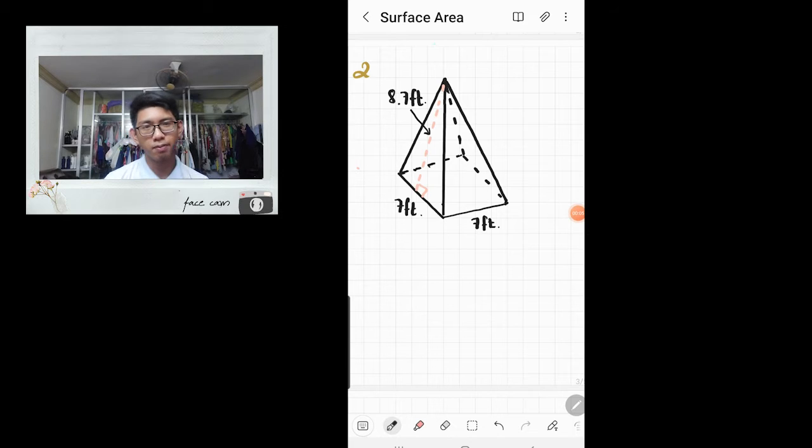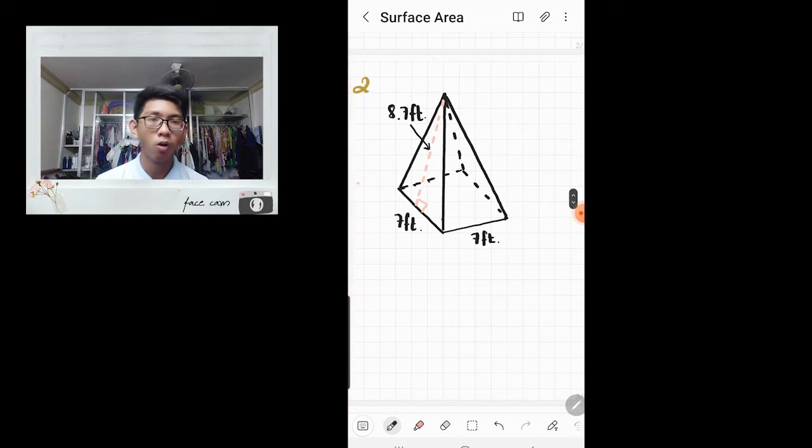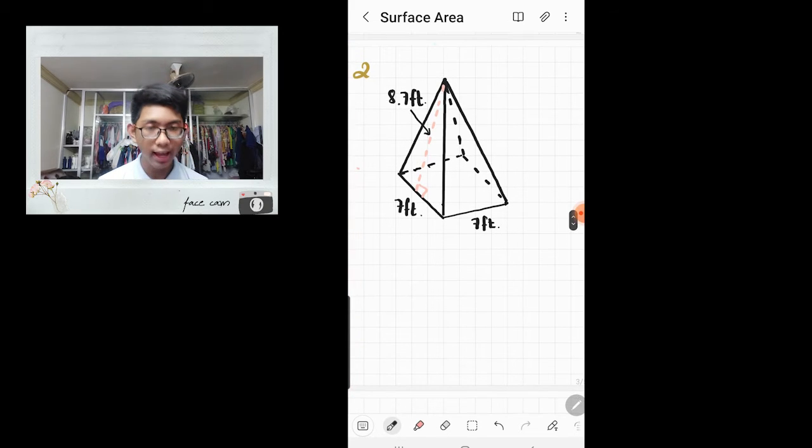Now let's move on to the pyramid. Let's take a moment to observe this solid. We can see that this pyramid has a rectangular base. So its base is in the shape of a rectangle with the dimensions of 7 feet by 7 feet. Since a rectangle has 4 sides, which means that this pyramid has 4 triangular sides. And each triangle side has the height of 8.7 feet.